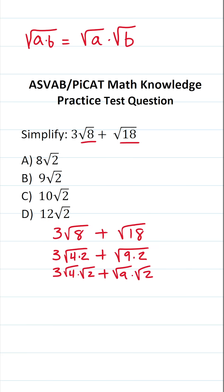What is the square root of 4? The square root of 4 is 2, so this becomes 3 times 2 times the square root of 2. Plus, what is the square root of 9? The square root of 9 is 3, so this becomes 3 times the square root of 2.